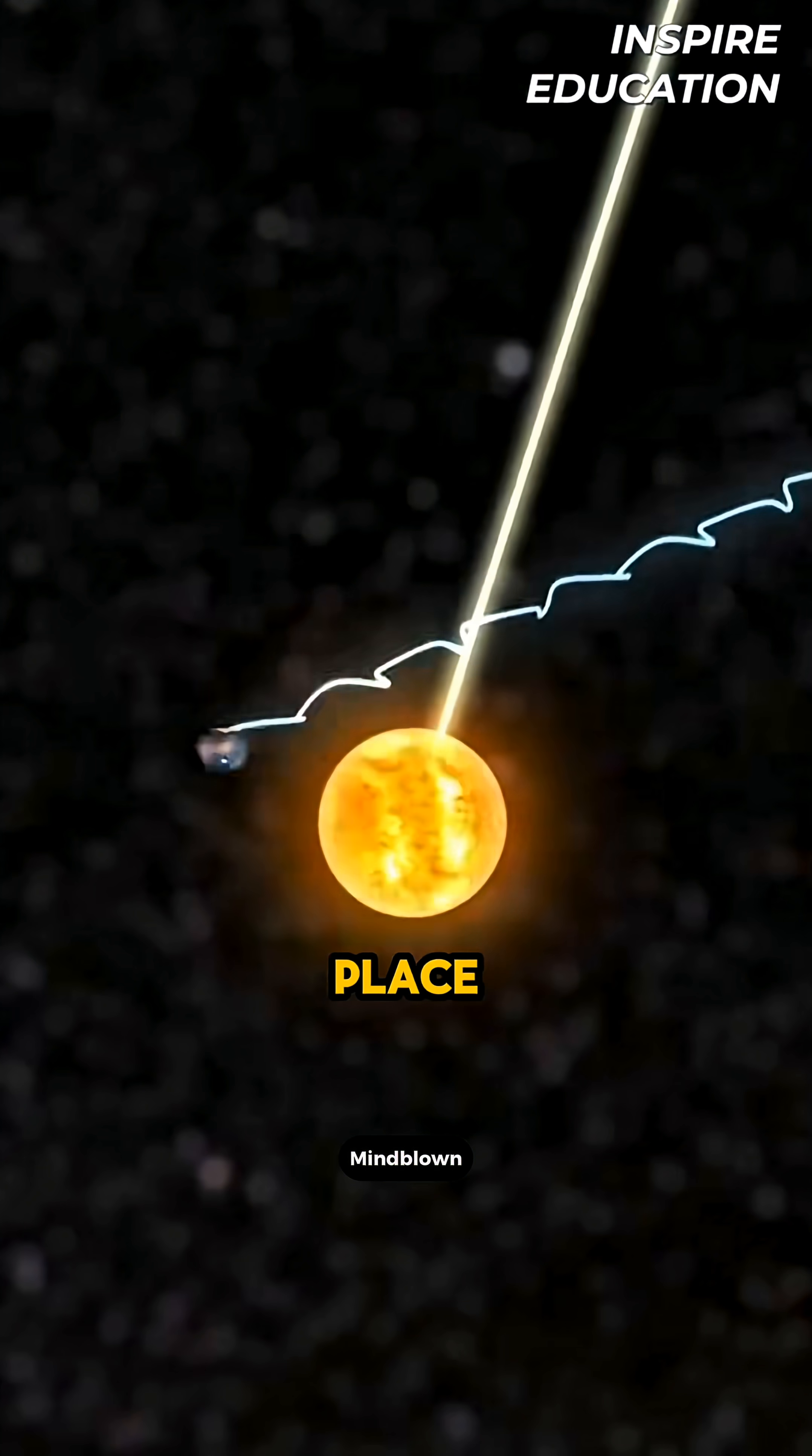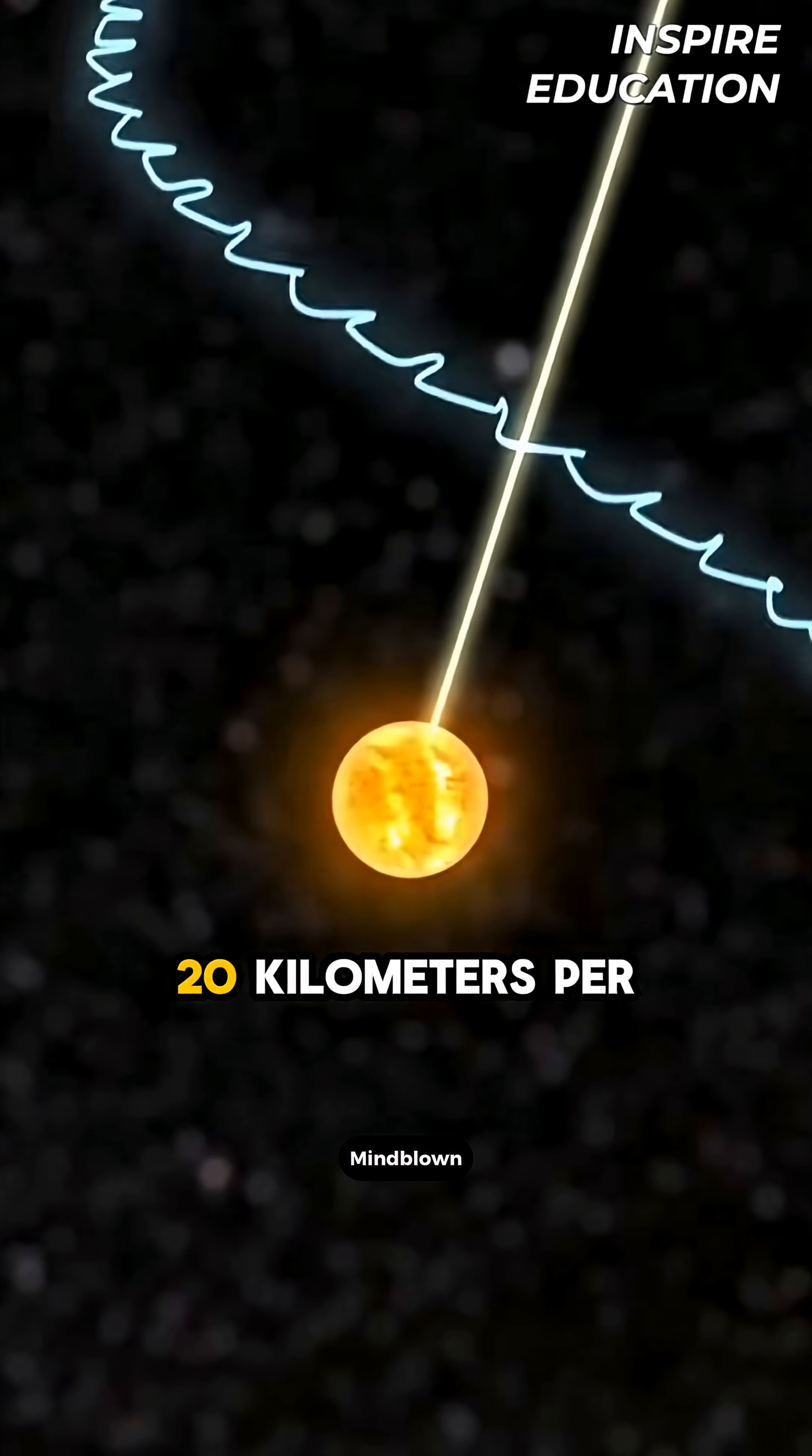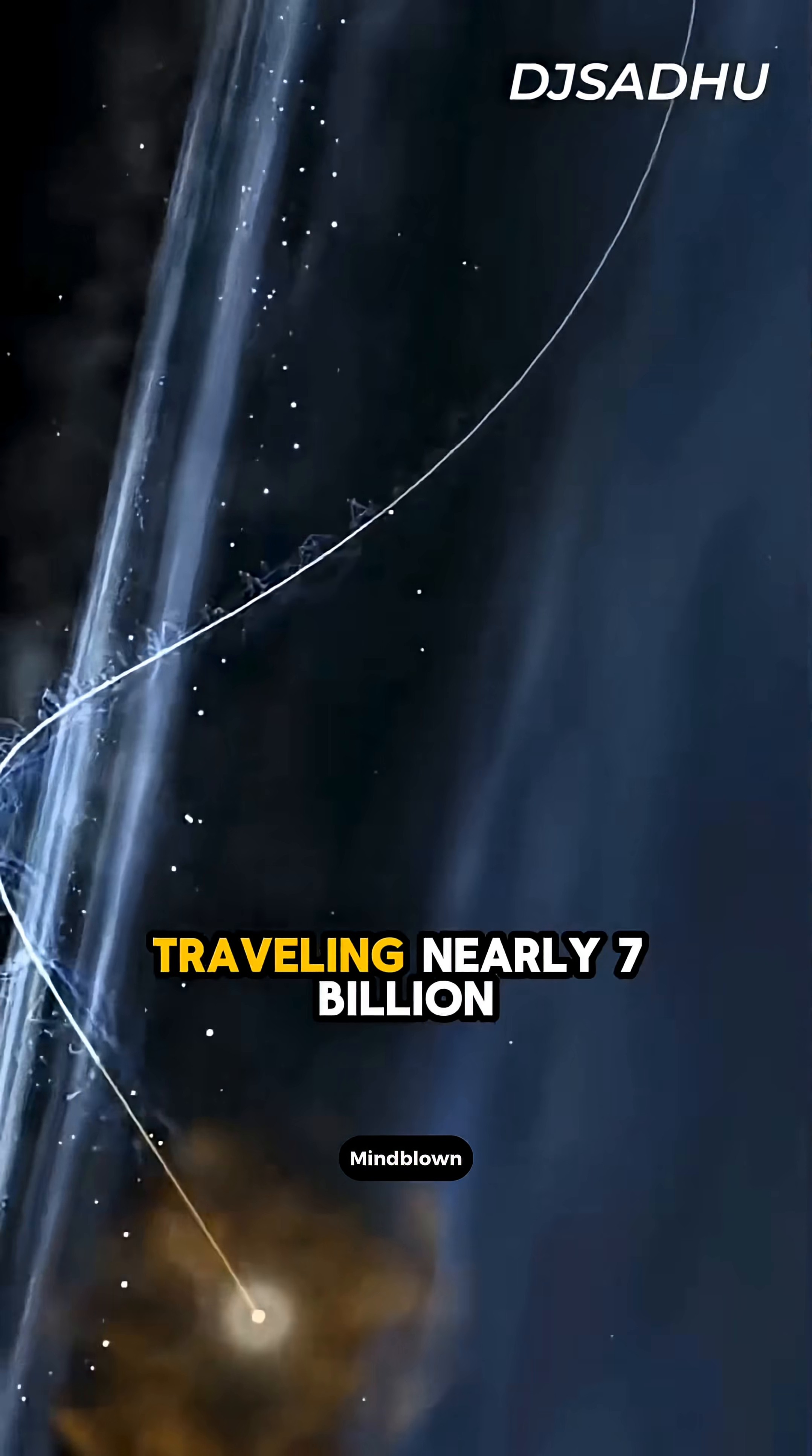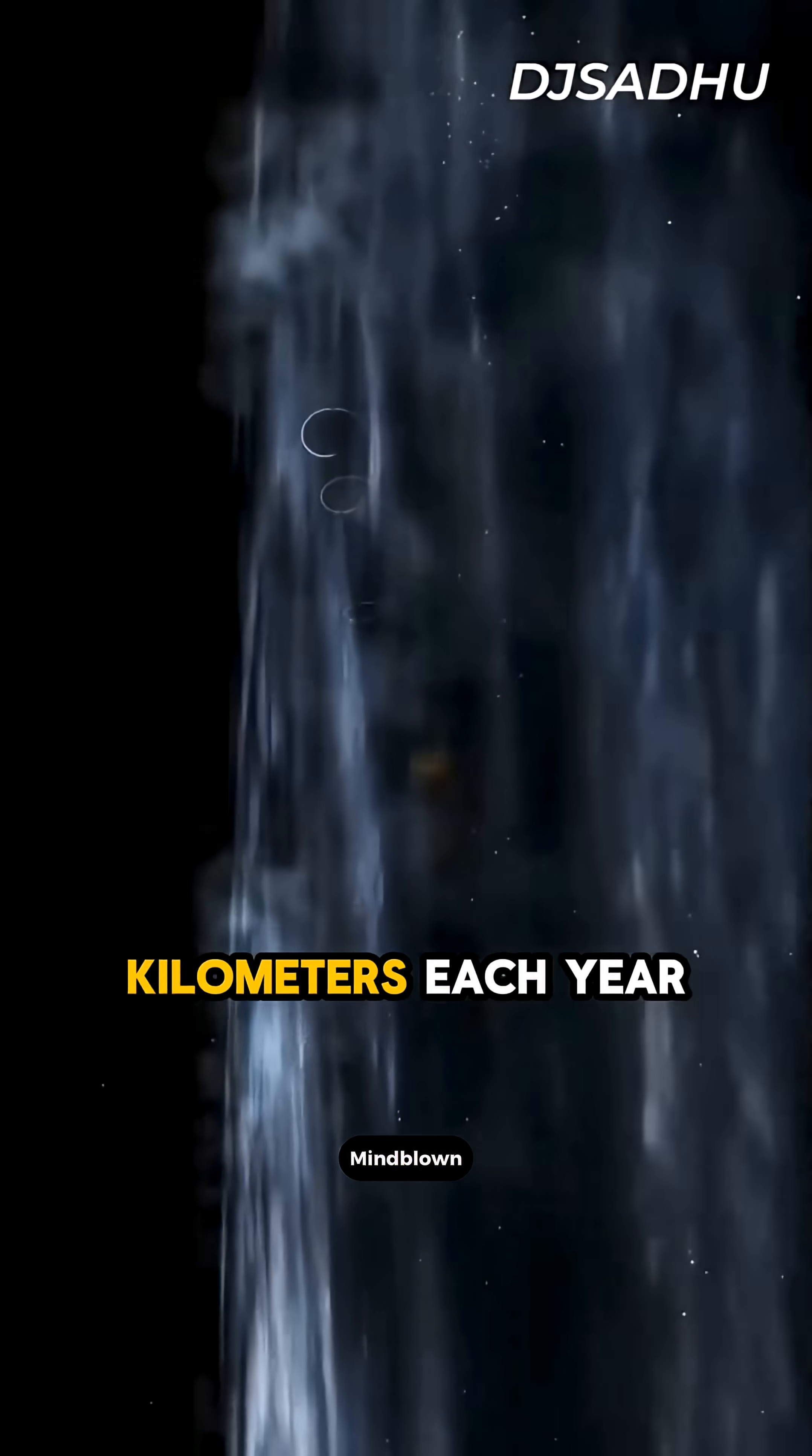The Sun isn't just sitting in place. It's racing through the universe at 20 kilometers per second, traveling nearly 7 billion kilometers each year.